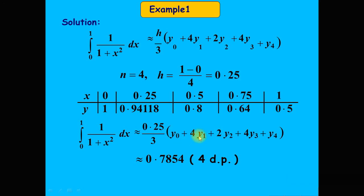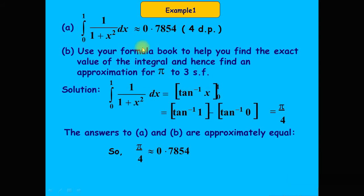Putting the values of y₀, y₁, y₂, y₃, and y₄ into the Simpson's rule formula, where h = 0.25, we compute h/3 = 0.25/3. Using Simpson's one-third rule, the result of this definite integration equals 0.7854, correct to four decimal places.